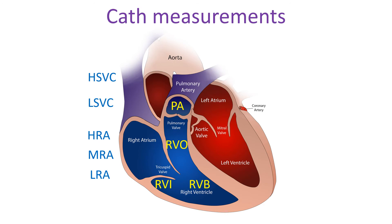Similarly, two superior vena cava samples are also taken — high and low SVC — especially when a sinus venosus type of atrial septal defect is suspected. Three samples are taken in the right atrium: high, mid, and low RA. As the right atrium is the mixing chamber for superior and inferior vena cava blood with quite different oxygen content, RA saturation has a wide range between these locations. In addition, the RA also receives blood from the coronary sinus with the lowest oxygen saturation in the body.